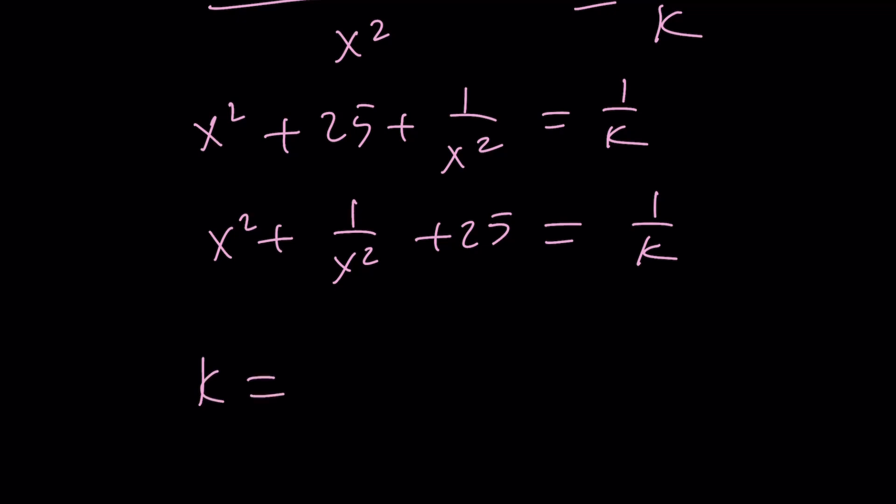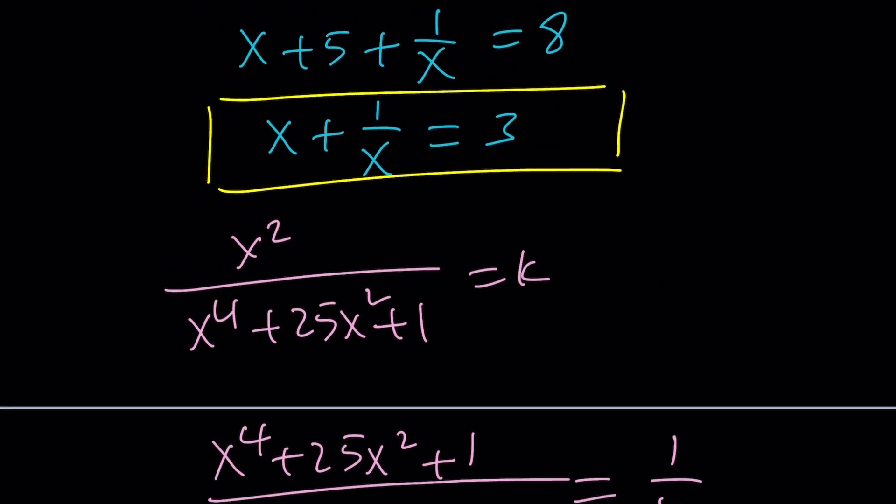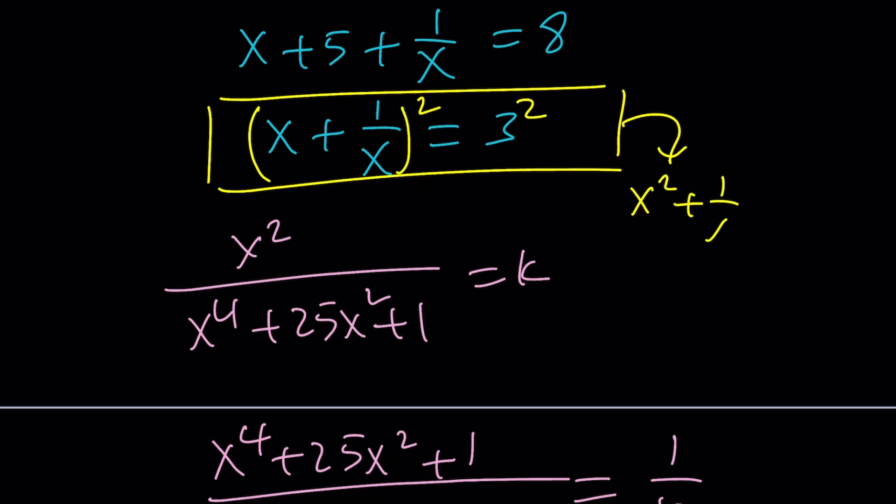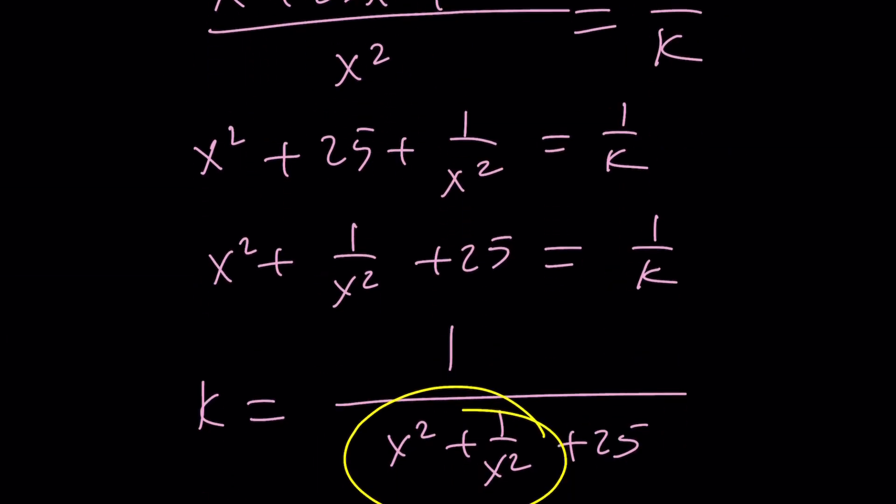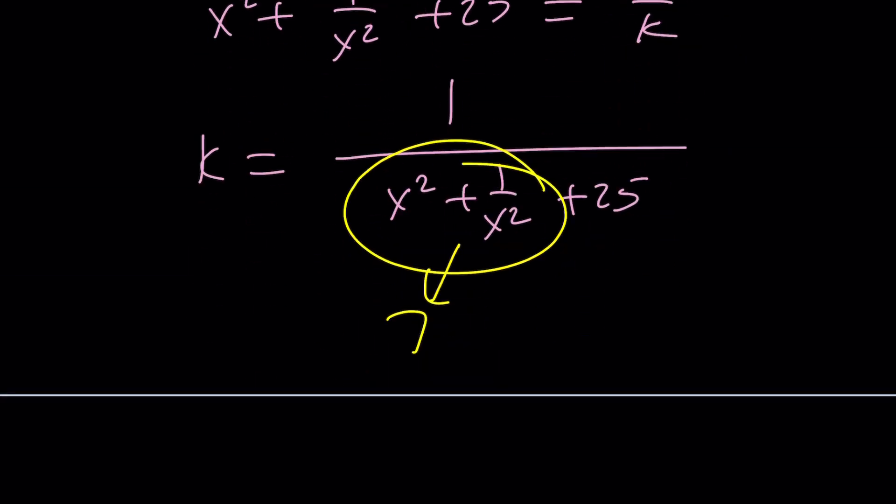And now this is x squared plus 1 over x squared plus 25, which is equal to 1 over k. You can write k as 1 over x squared plus 1 over x squared plus 25. That's the answer. But what is x squared plus 1 over x squared? I can find it easily. Look, if you just square both sides here, you get x squared plus 1 over x squared plus 2 equals 9, and then subtract 2 from both sides and this becomes 7. Great. So now we can replace this with 7. 7 plus 25 is 32, and this gives us 1 over 32 as before.